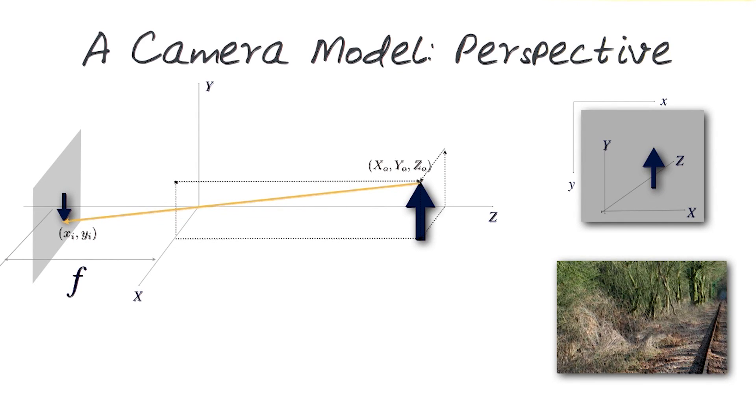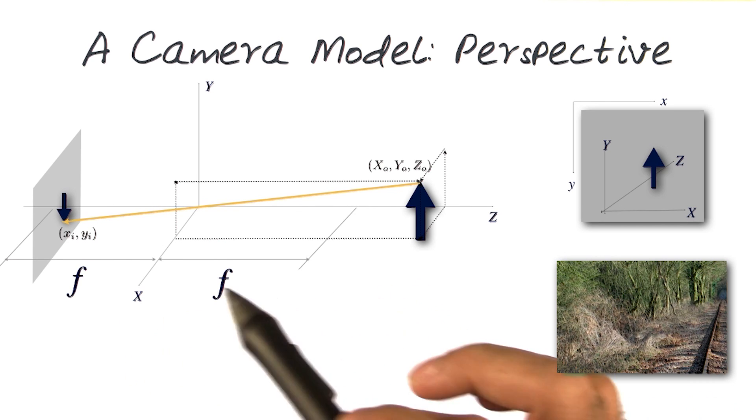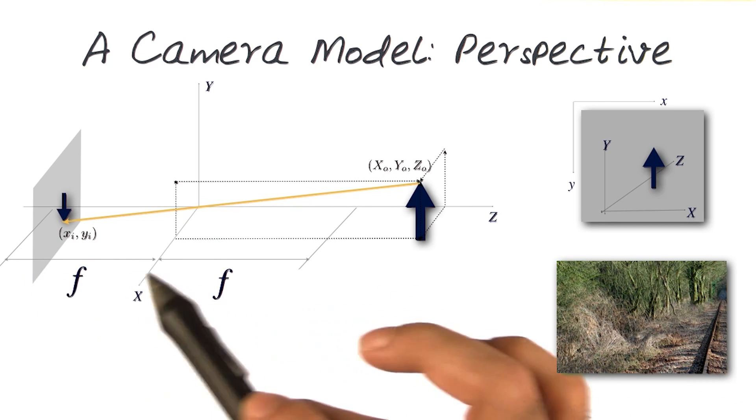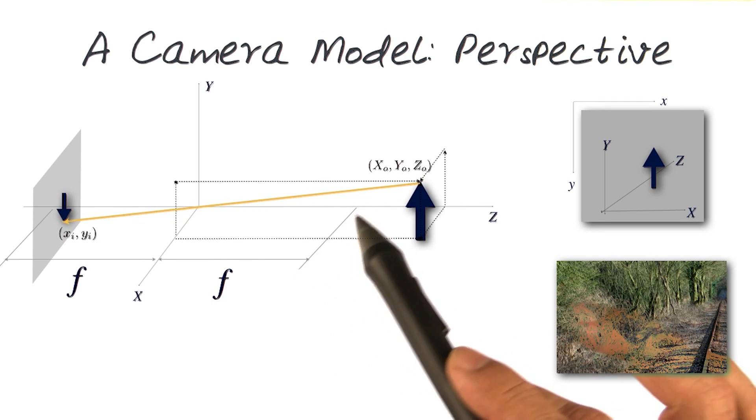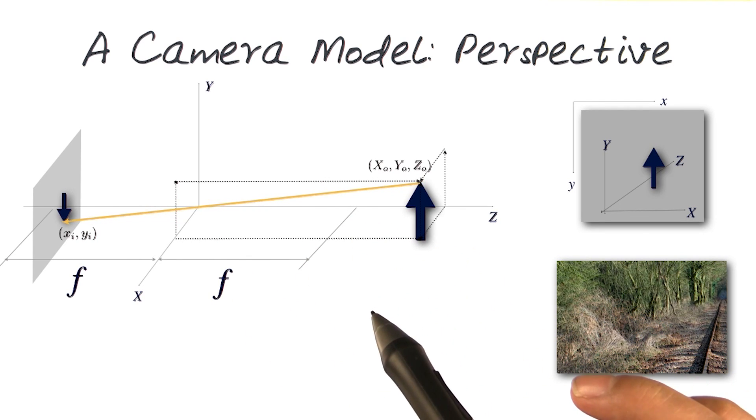Let's look at how the camera model and the perspective is extracted from this. We can actually simplify this a little bit. What I can do is take the focal length, which was on this side, and mirror it on the front side of this.